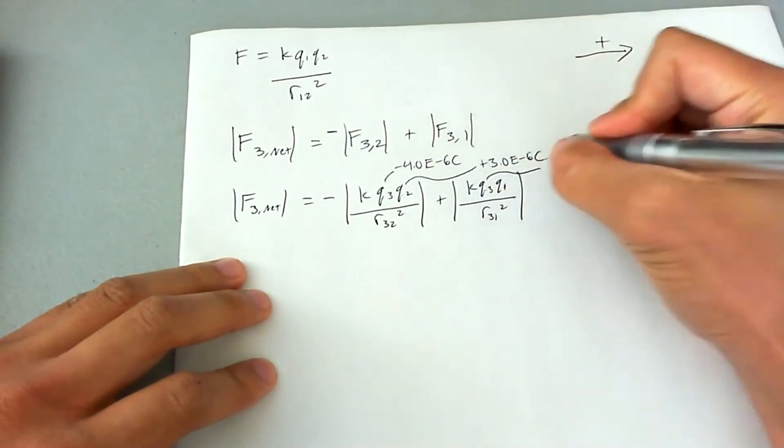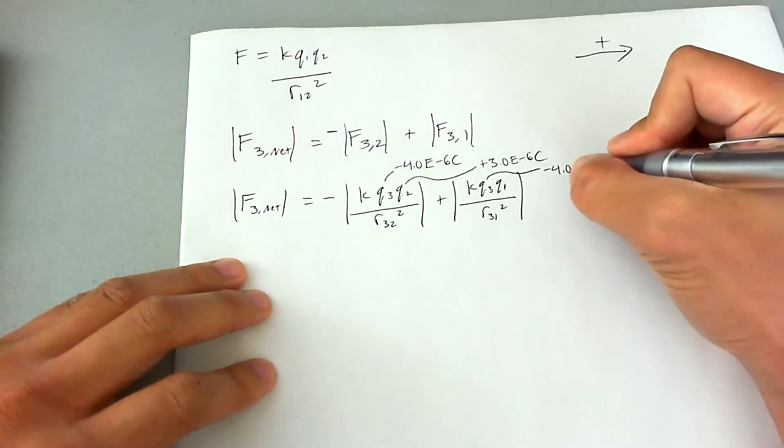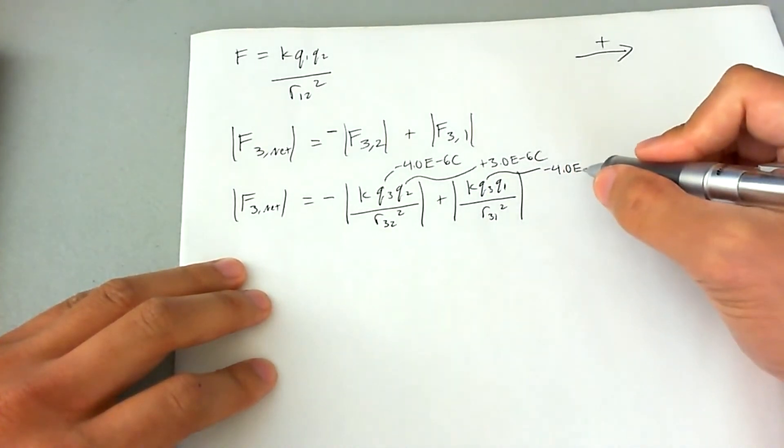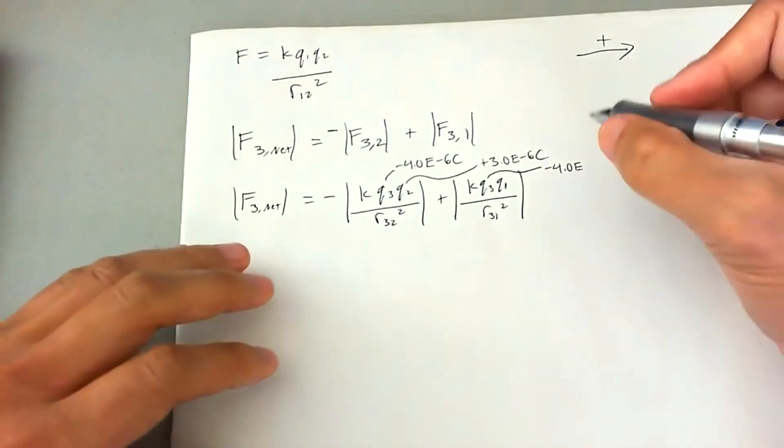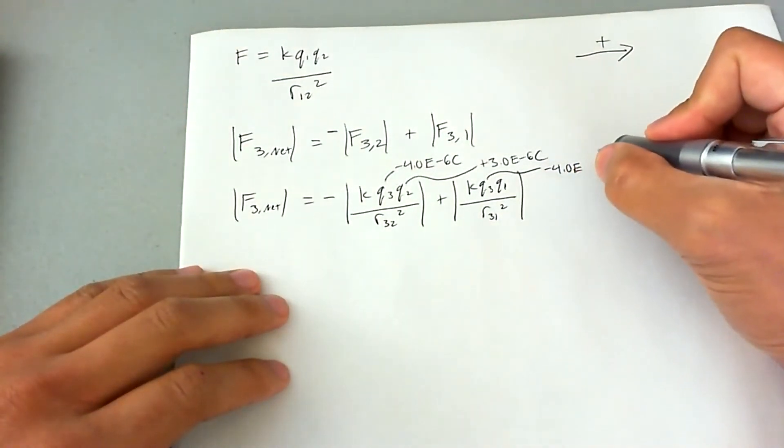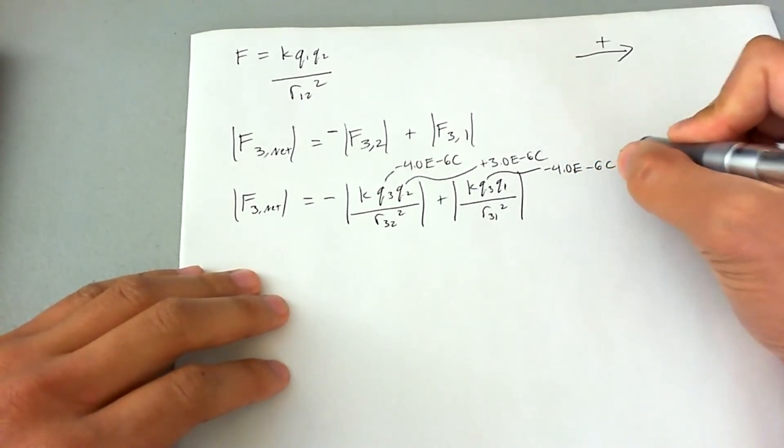q3, again, negative 4.0 times... I'm going to put E notation, just so we can get a variety of notation here, times 10 to the negative 6 coulombs.